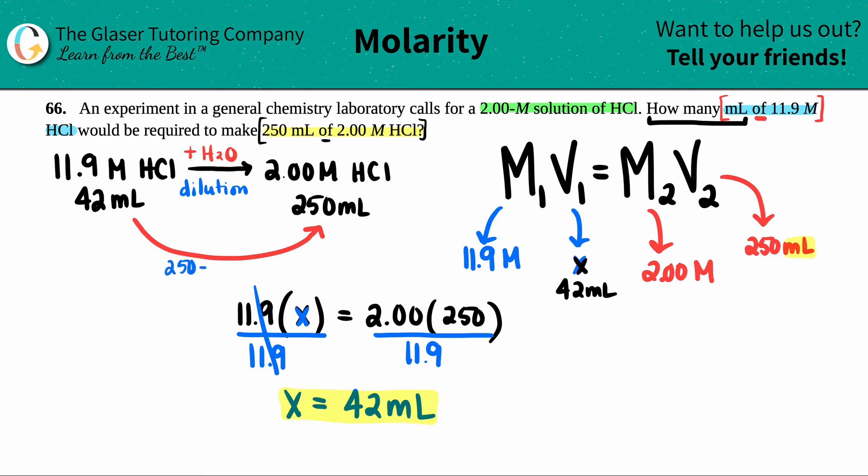250 minus 42, 250 minus 42 is 208. So you actually had to add 208 mils of water. Sometimes they ask that as a question. So just know the difference guys. This is how many mils of the actual solution you needed. So this is the final answer to this problem. But sometimes questions will say, how many mils of water should you have added? In this case, you would have put the 208 mils. So just know the difference guys.